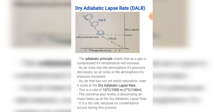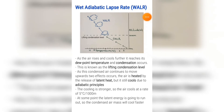The converse also works: a descending air mass heats up at the dry adiabatic lapse rate. This is called a dry rate because no condensation occurs during this process.